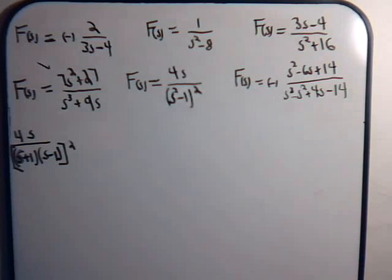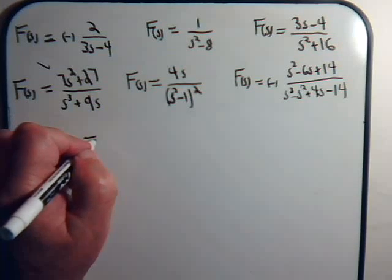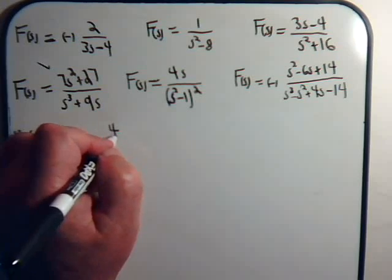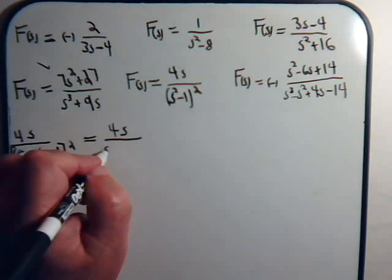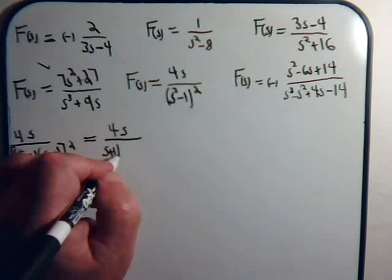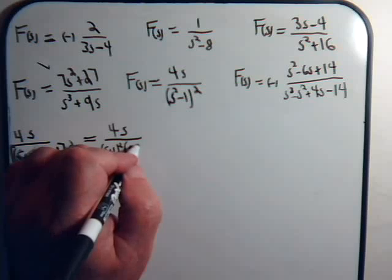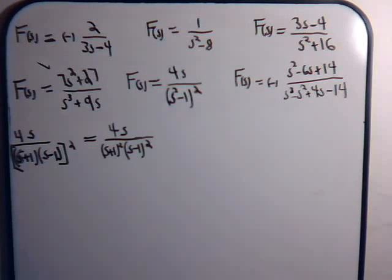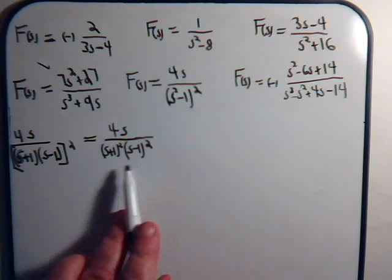So now this is going to come out being equal to 4s divided by s plus one squared times s minus one squared. So s plus one is squared and s minus one is squared — both of these are squared.